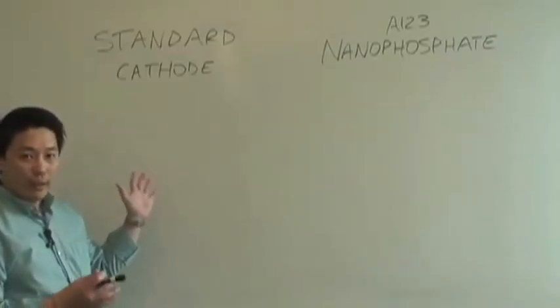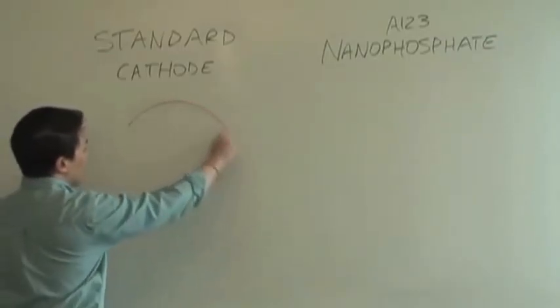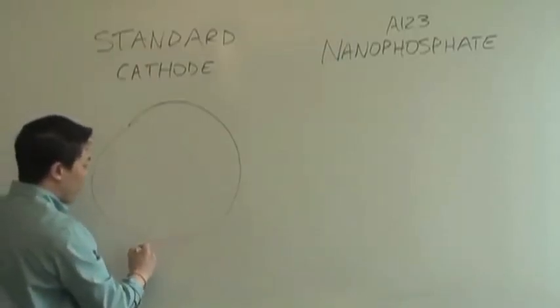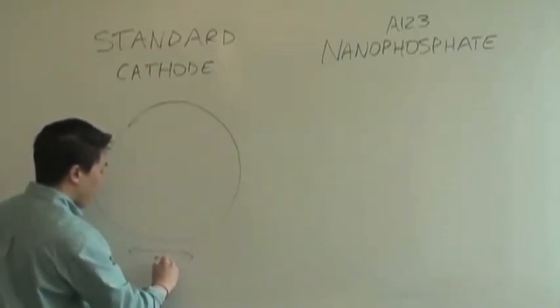So if you look at your standard cathode material, each particle size is approximately a few microns in diameter, let's just say five microns.